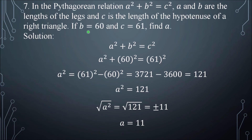Number 7. In the Pythagorean relation, a² + b² = c². This is the formula for the Pythagorean theorem, where a and b are the lengths of the legs and c is the length of the hypotenuse of a right triangle. If b = 60 and c = 61, what is the value of a? Using the formula, a is missing, b is 60, and c is 61.